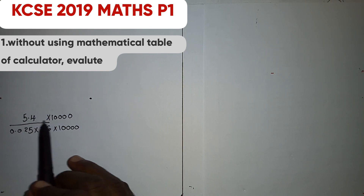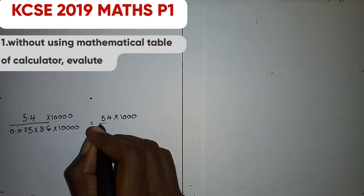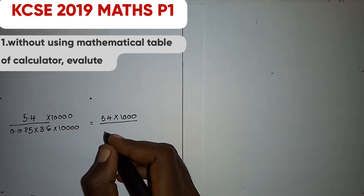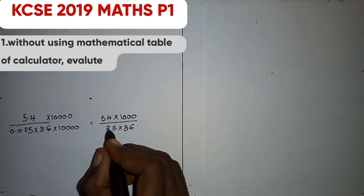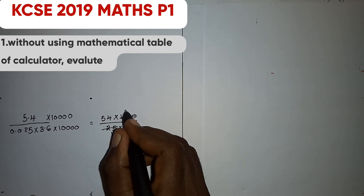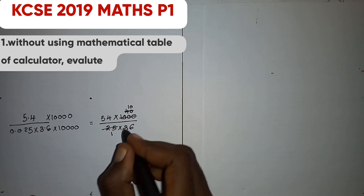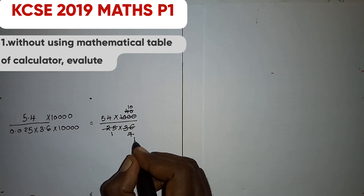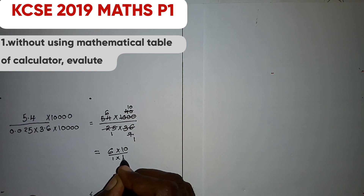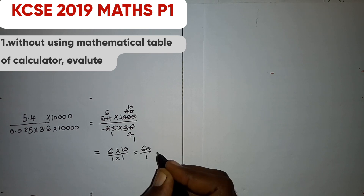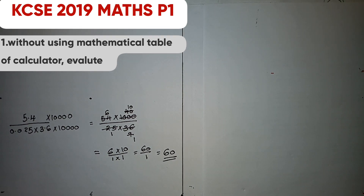If we say 5.4 times 10,000, we get 54 times 10 times 1,000 over the denominator. All decimal places are going to be removed and we get 25 times 36. Simplifying: 6 times 10 over 1 times 1 gives 60 over 1, which equals 60.